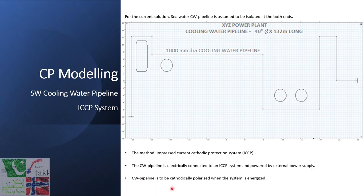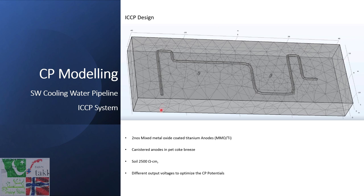The cooling water pipeline is to be cathodically polarized when the system is energized, and the pipeline potential will be measured accordingly. The CP design comprises two mixed metal oxide coated titanium anodes canistered in petroleum coke breeze. The plant soil resistivity is assumed to be 2500 ohm-centimeter around the pipeline. In this method, different output voltages will be applied via the anodes to optimize the CP potential of the pipeline.